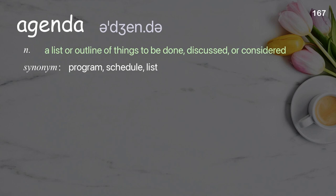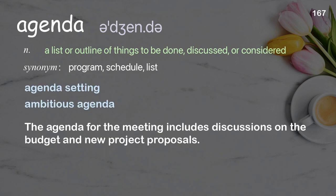Agenda: a list or outline of things to be done, discussed, or considered. Examples: agenda setting, ambitious agenda. The agenda for the meeting includes discussions on the budget and new project proposals.